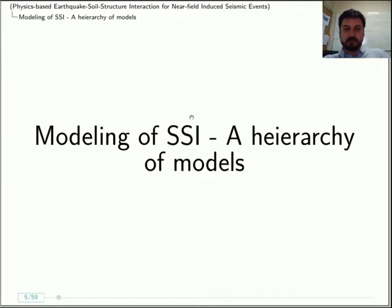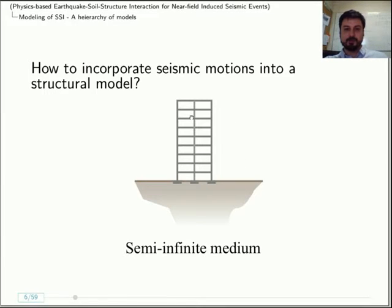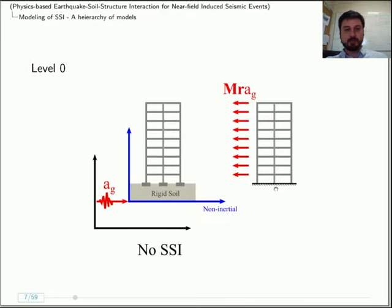In modeling of SSI, the first problem that comes is how do you incorporate seismic motions into a structural model. You have some structure over a semi-infinite medium. How do you put the earthquake into this model? The level zero approach is not to do soil-structure interaction at all. In that case, you can attach a non-inertial frame of reference over a rigid boundary or rigid foundation and apply a seismogram, and that manifests itself as a series of lateral forces on the structure.